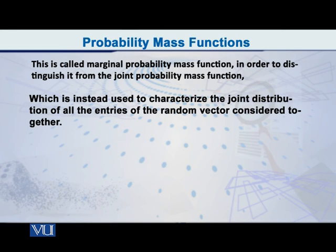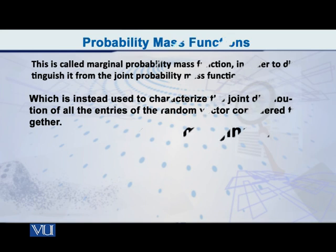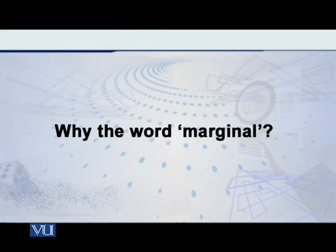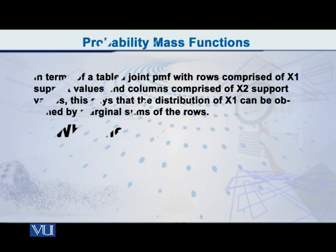The joint PMF is the one which characterizes the joint distribution of all the variables taken together. To understand marginal values, the discrete variables example is very good, because you can then think about a bivariate table — for example, if you have two discrete random variables.